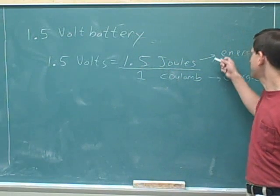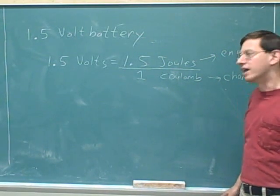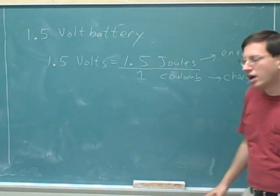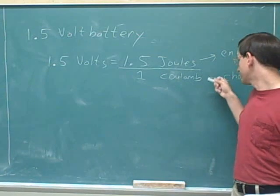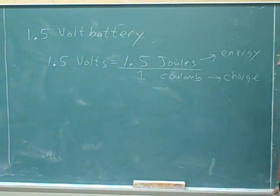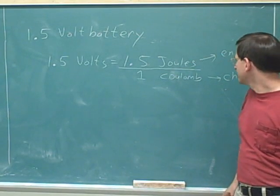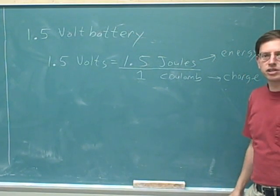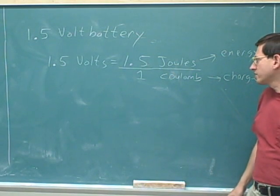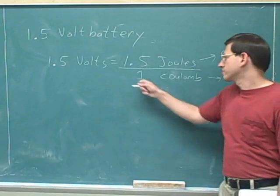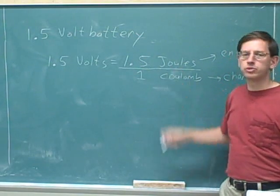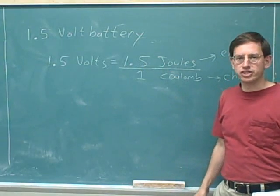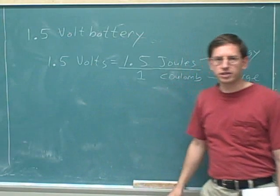The whole point of a battery is to deliver energy to a device or appliance, and the energy is delivered when charge is transferred through the battery. Obviously, the more charge that's transferred, the more energy the battery can deliver. So what does it mean if you have a 1.5 volt battery? It means that if the battery transfers one coulomb of charge, that will allow it to deliver 1.5 joules of energy to the appliance. That's the meaning of saying you have a 1.5 volt battery.